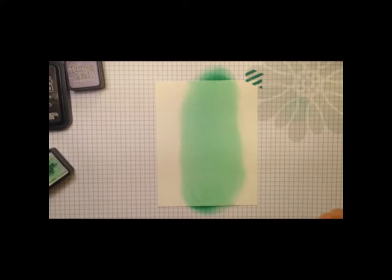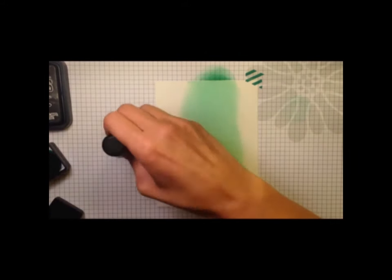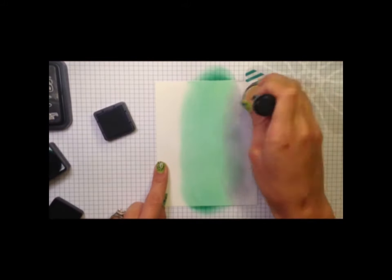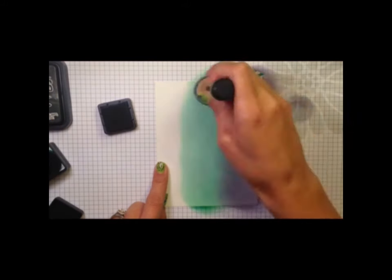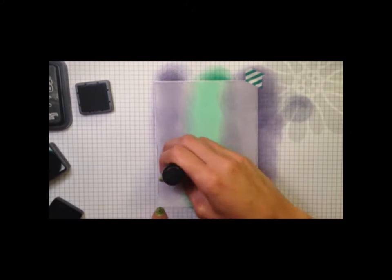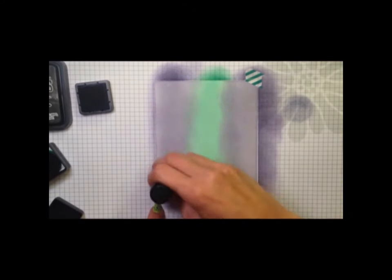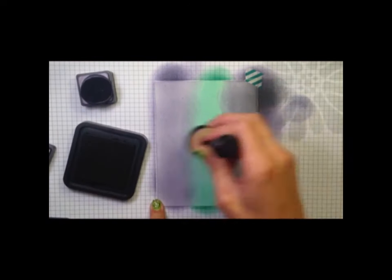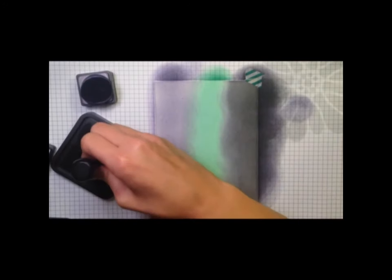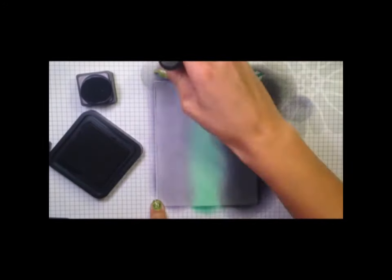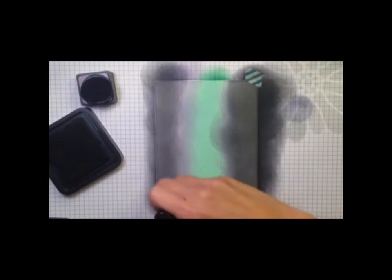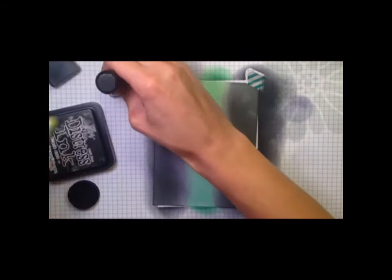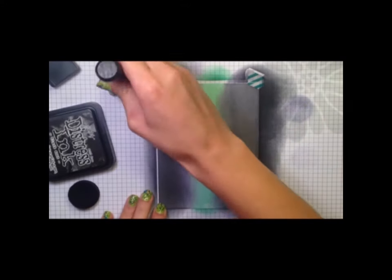I'm going to be focusing the darker inks on the outside and just working the ink in until I'm satisfied with the color. I'm just going to go back and forth. I didn't want the colors to be very visible, I just wanted there to be a hint of each color.